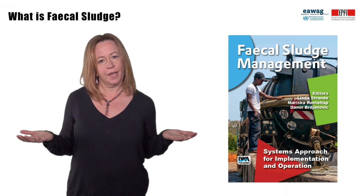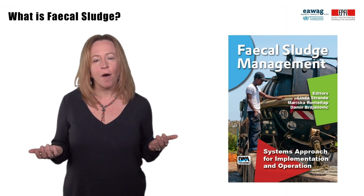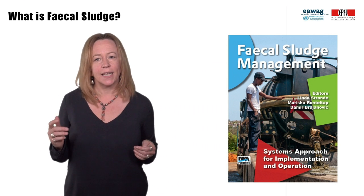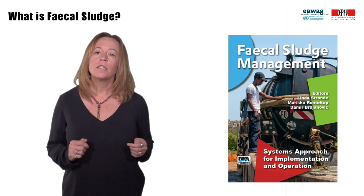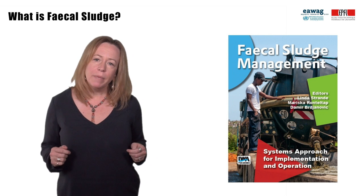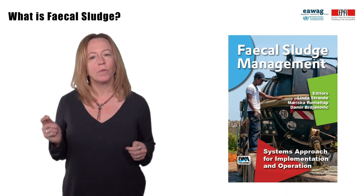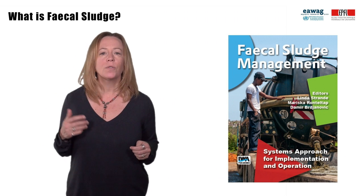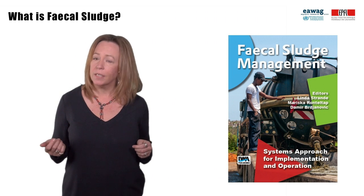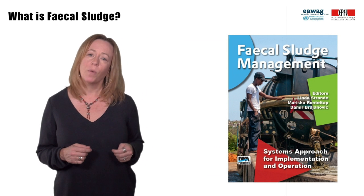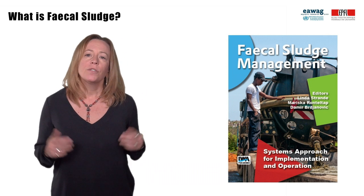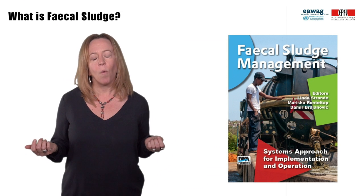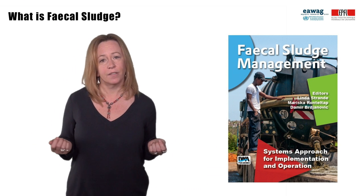What is fecal sludge? Fecal sludge is any combination of wastewater and excreta that comes from on-site sanitation technologies, specifically meaning it has not been transported through a sewer. Examples include pit latrines, unsewered public ablution blocks, septic tanks, and dry toilets. Fecal sludge is highly variable in consistency, quantity, and concentration.